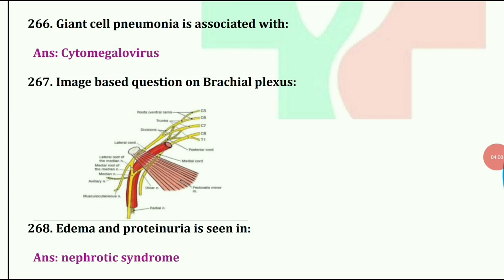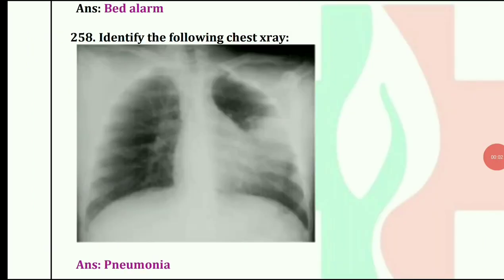Image-based question on brachial plexus — and this is the last question. Edema and proteinuria is seen in nephrotic syndrome. I hope you like this video. Share it with your FMG friends.